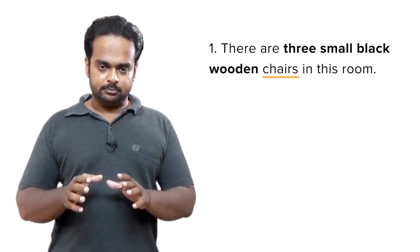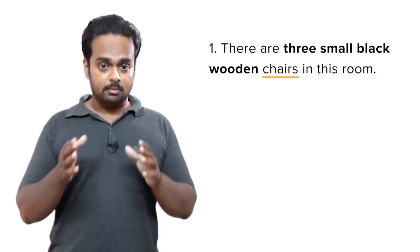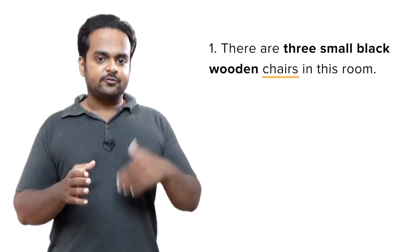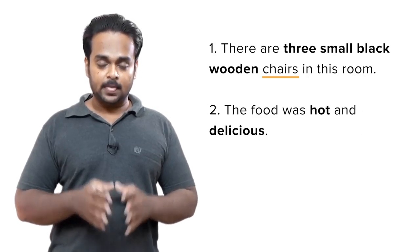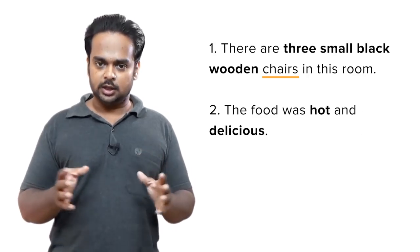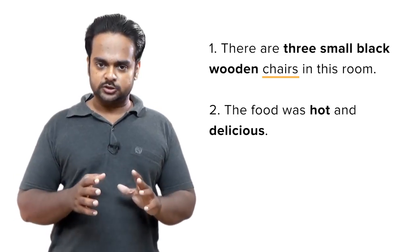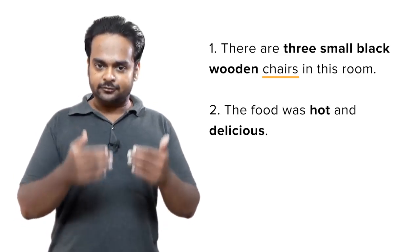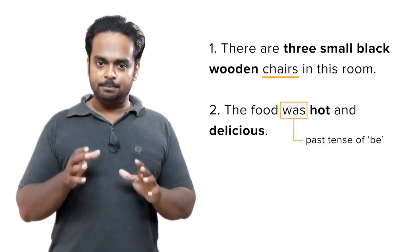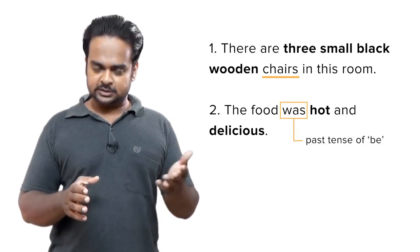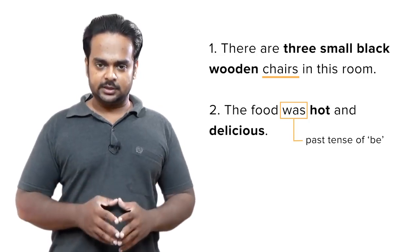Now in this example the adjectives occur before the noun, but they can also appear after the noun or pronoun, like in this example: 'The food was hot and delicious.' Here the adjectives hot and delicious appear after the noun 'food', and notice that we use the linking verb 'be' — past tense 'was' — to connect the noun and the adjectives.